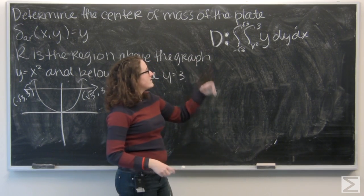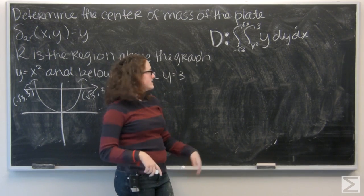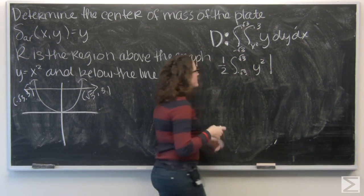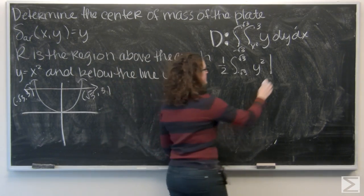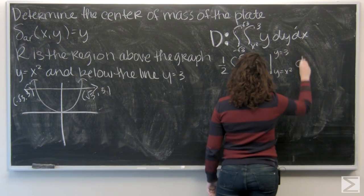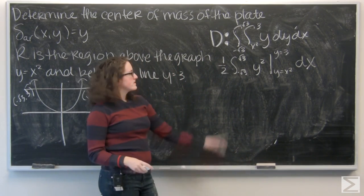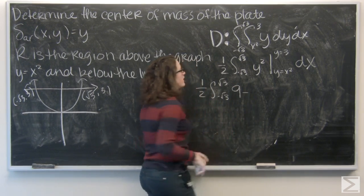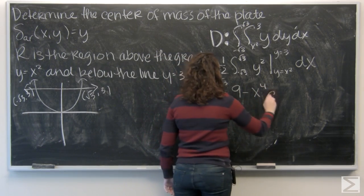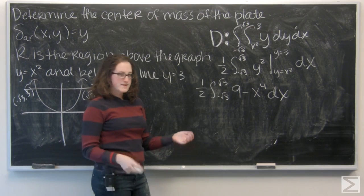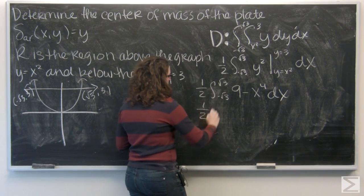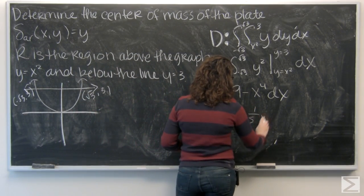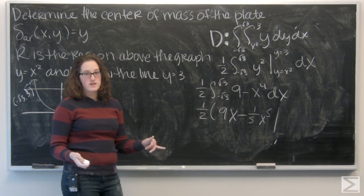Let's start integrating. I have the integral of y dy, which gives me one half y squared. Let me pull that one half out in front, and I want to evaluate that from y equals x squared to y equals 3. Plugging in: 3 squared is 9, and x squared squared is x to the fourth. Now I'm ready to integrate with respect to x. Starting with 9, I'm going to get 9x, and x to the fourth becomes one fifth x to the fifth. I want to evaluate that from negative square root of 3 to square root of 3.